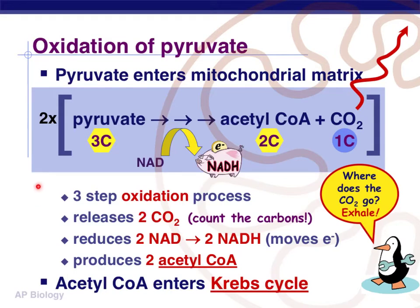Along the way, for every turn, we're going to make one molecule of the electron carrier NADH. This happens twice, so ultimately from the oxidation of pyruvate, we end up with two NADHs, two acetyl CoAs, and two molecules of carbon dioxide.